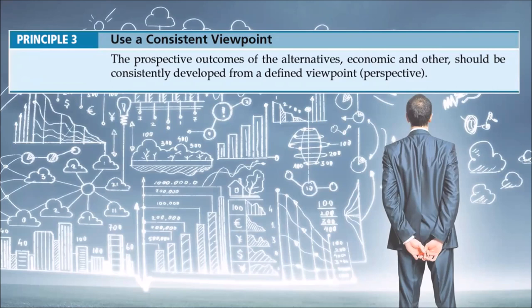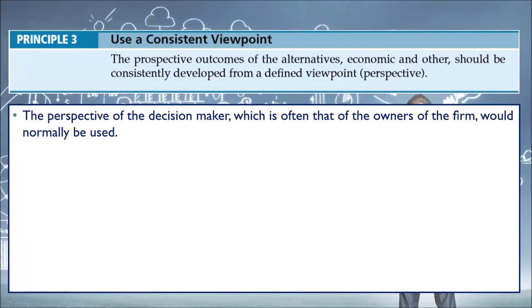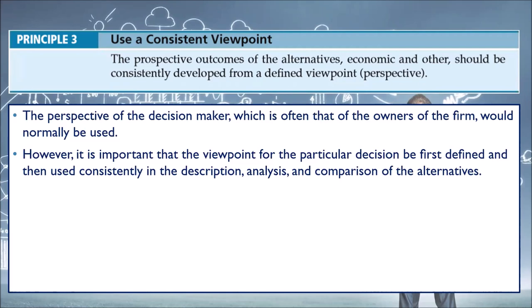Principle 3: use a consistent viewpoint. The prospective outcomes of alternatives — economic and other — should be consistently developed from a defined viewpoint or perspective. The perspective of the decision maker, which is often that of the owners of the firm, would normally be used. However, it is important that the viewpoint for the particular decision be first defined and then used consistently in the description, analysis, and comparison of the alternatives.